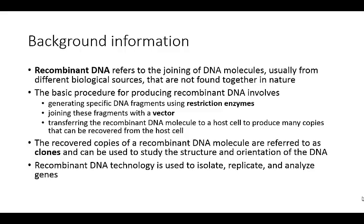The basic way that you're going to do this is you're going to cut the DNA using enzymes called restriction enzymes. These will cut the DNA at very specific sequences. These fragments are then joined together and placed into a vector — a way to transfer these molecules around or to get them expressed in different organisms — and then it's put into the host cell, whether that's a bacteria, a mammalian cell, or whatever type of cell, and it will produce many copies that can then be recovered.